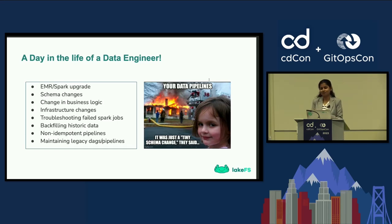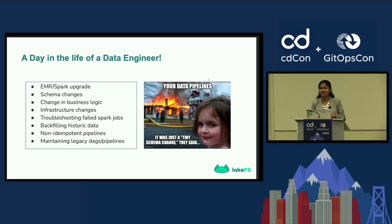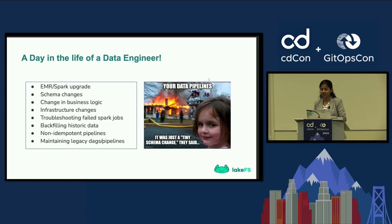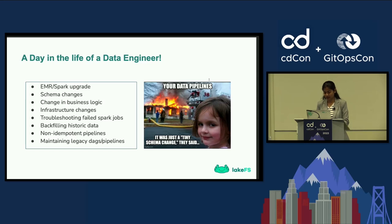Troubleshooting failed Spark jobs is part of the responsibilities of a data engineering team. And non-idempotent pipelines — most of the time when we deal with pipelines or failed job runs, we want to write idempotent pipelines so you just click rerun and it reruns end-to-end, but that does not happen very often. And the legacy DAGs that none of us want to touch — at some point we do have to make changes to keep them running for a longer period of time.